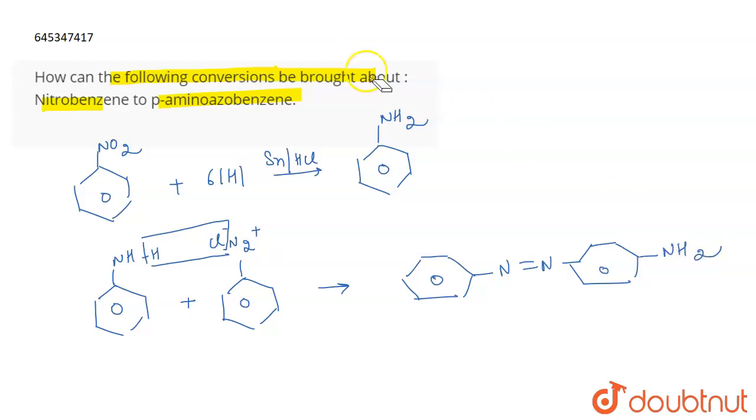Basically, on rearranging, we get this para-amino-azobenzene. This is what your para-amino-azobenzene is.